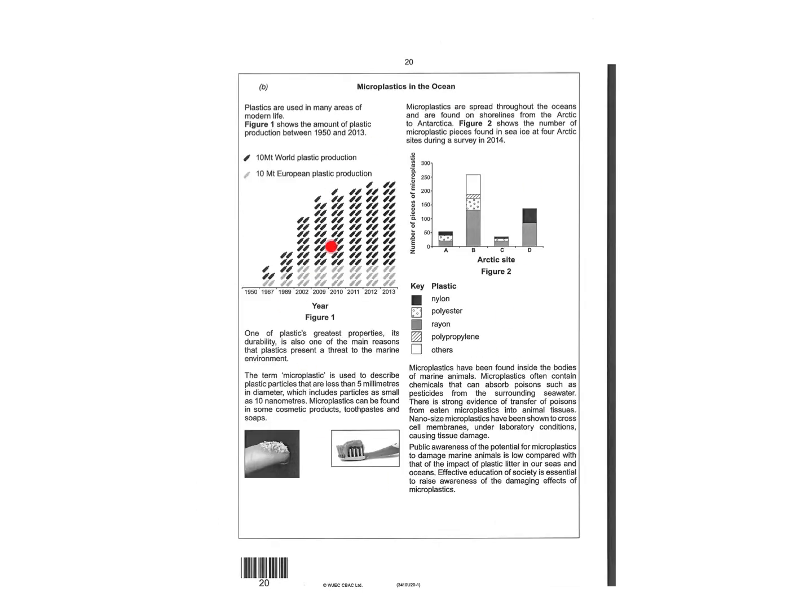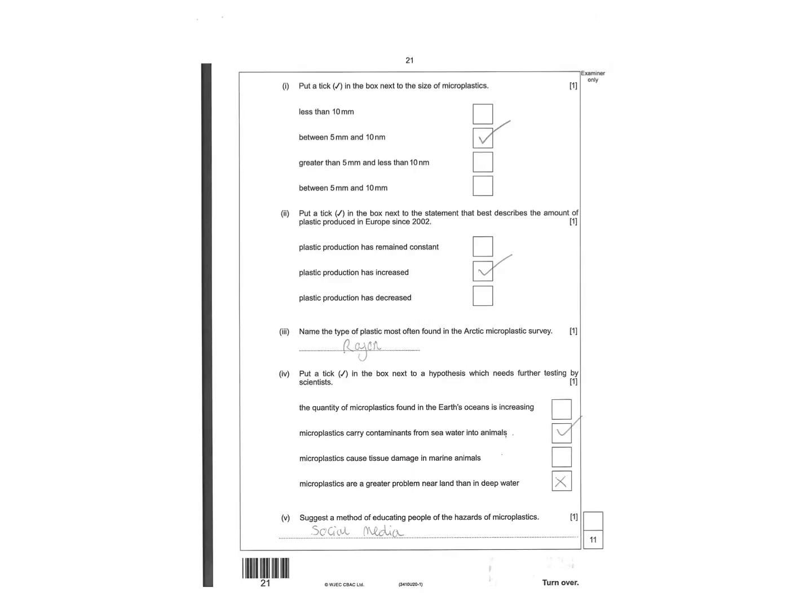Then there is reams and reams of information here. Turn to the next page and tick the answers before you read through it all. Put a tick next to the box the best describes the size of microplastics - between five millimeters and ten nanometers.